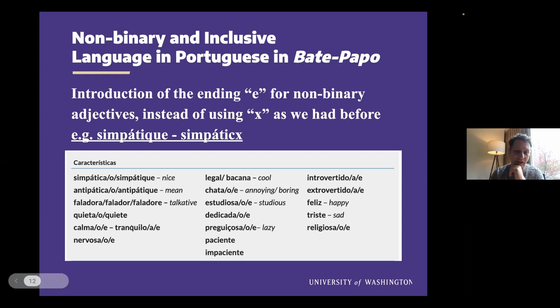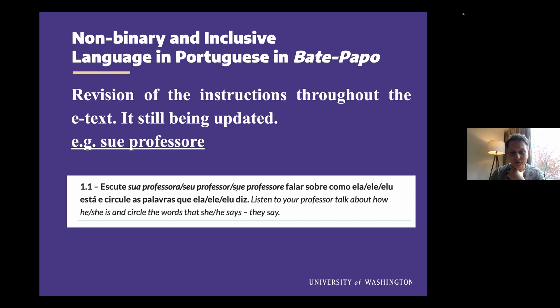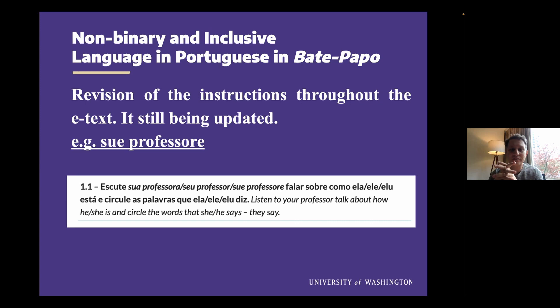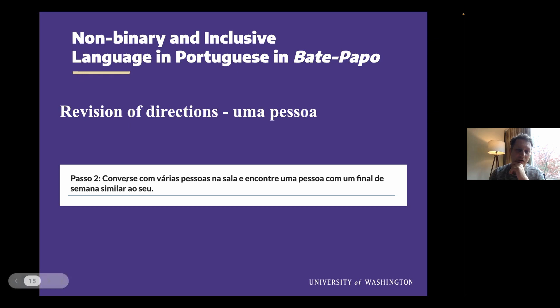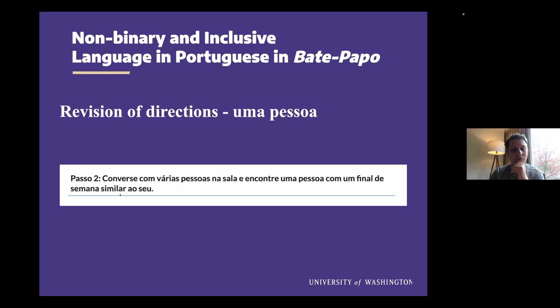On the instructions, I started changing them. Like here: 'escute sua professora, seu professor, sui professore, falar sobre como ela, ele, elu está, e circule as palavras que ela, ele, elu diz.' I'm trying to find a way of making it less convoluted — with fewer slashes — and it has been a process for me. Using the word 'pessoa' for directions seems to be a little bit more streamlined: 'Converse com várias pessoas na sala, encontrei uma pessoa com um final de semana similar ao seu.' Because before I had 'uma colega, um colega, um me colega' — and I found it hard to read. I also understand that for people with dyslexia, texts with lots of X's all over them can be quite difficult to read.